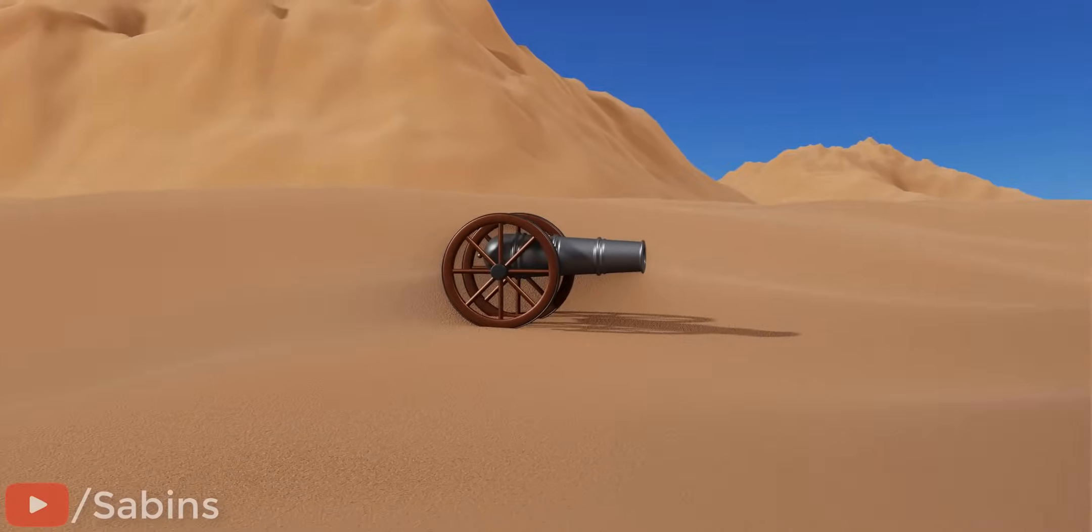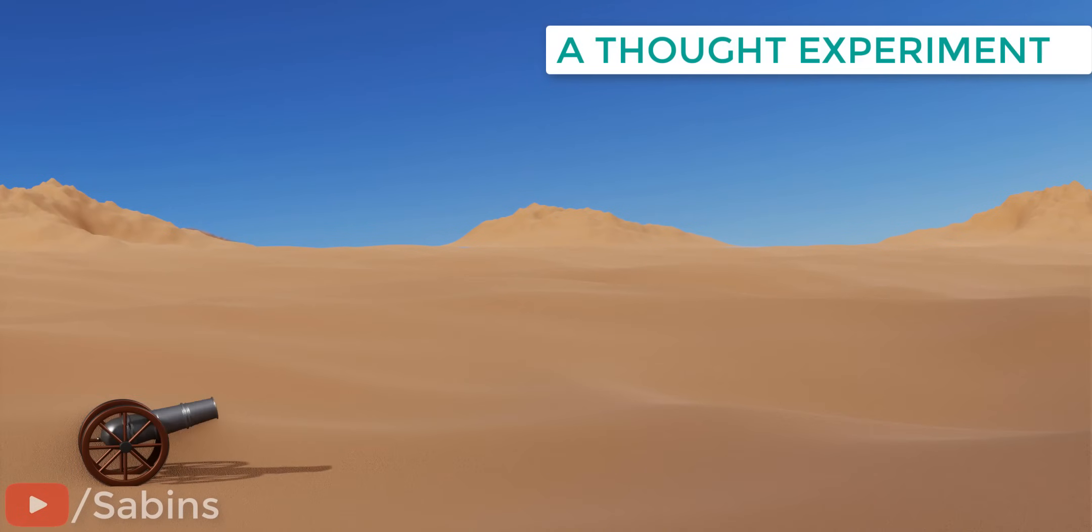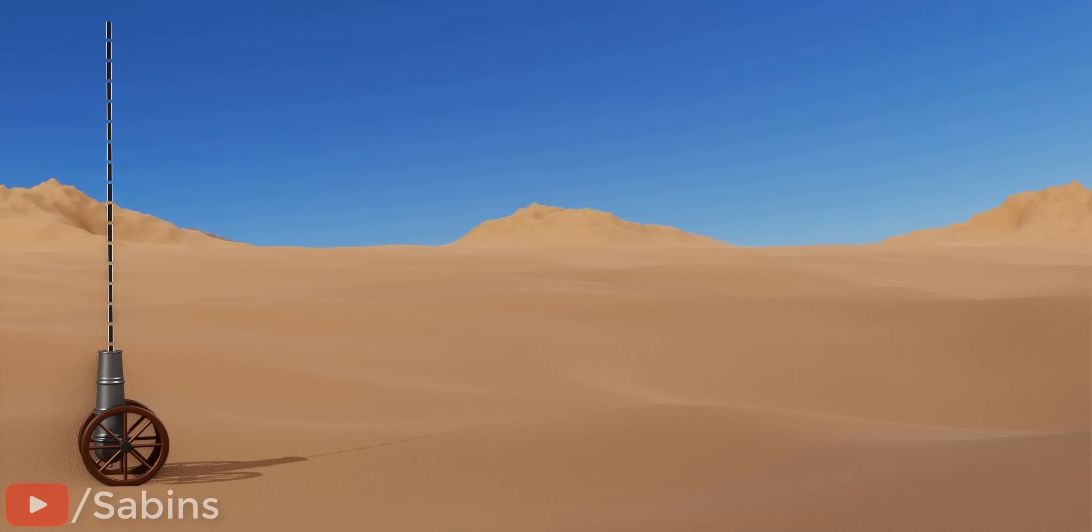Here's an interesting thought experiment. This cannon is ejecting a ball perfectly vertically. The ball will come back to its initial position, or zero movement, in the horizontal direction. Now, let's reduce the angle and eject it with the same speed. Now, the ball can travel horizontally.